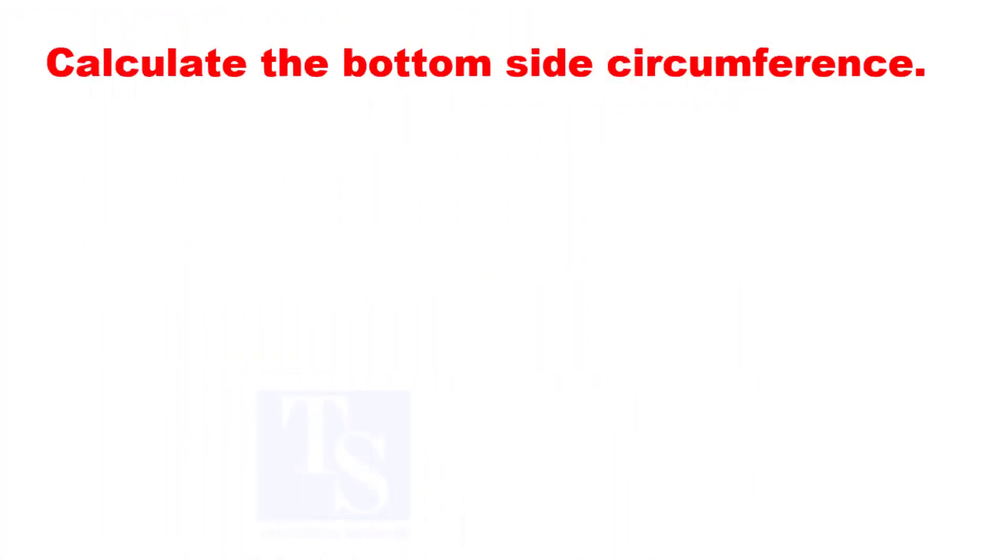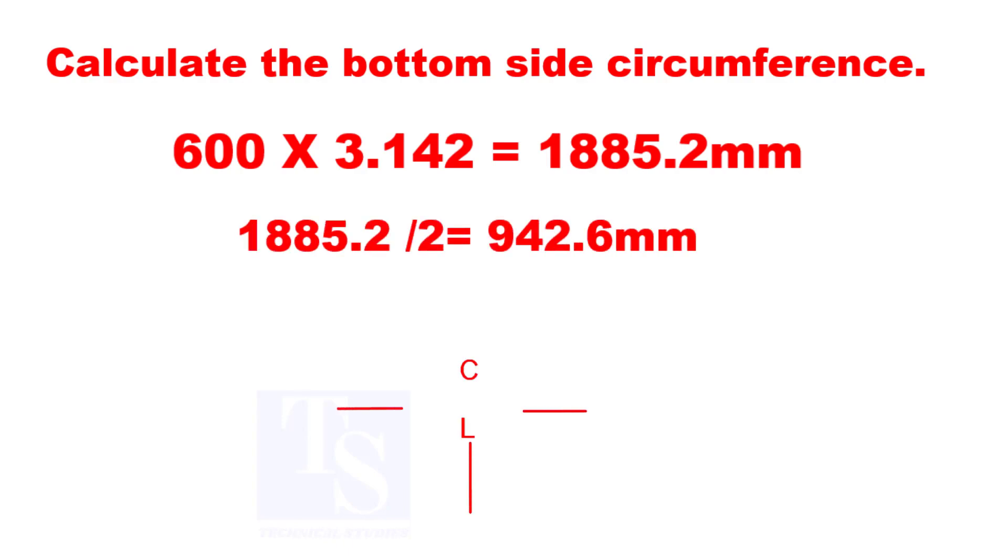Let us calculate the bottom side mean diameter circumference. Divide the circumference by 2 and mark the length on both sides. If required, you can mark the full length to one side.